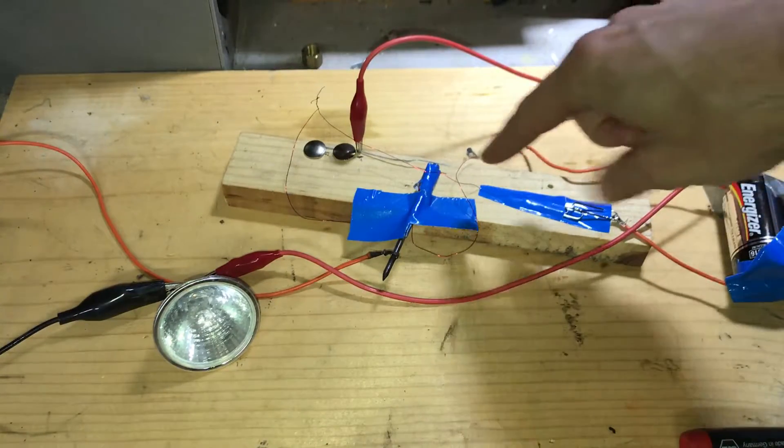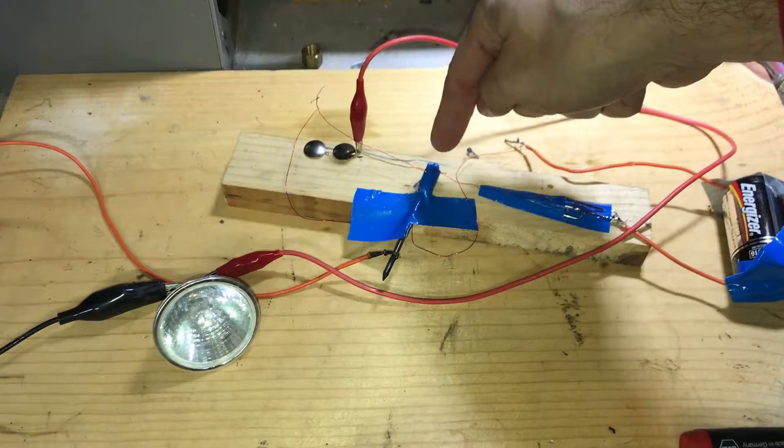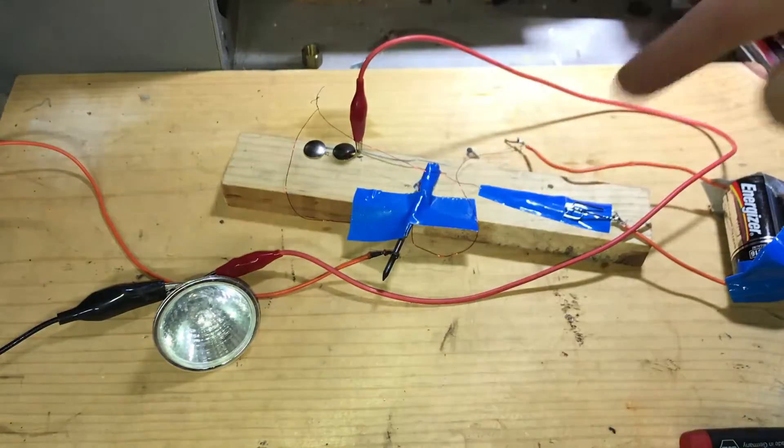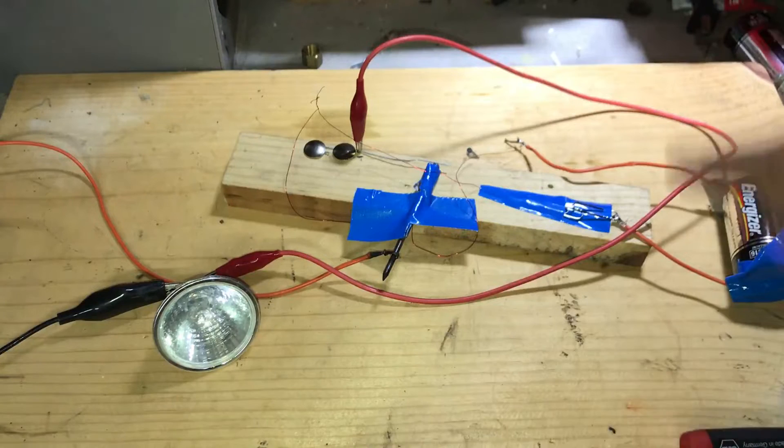So when I close this, it activates this magnet that pulls this in, which completes the circuit that goes through the nail. So it happens to use the nail as the circuit. Okay, so it's a little finicky.